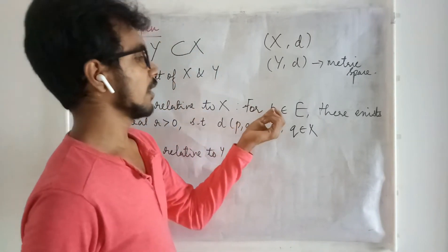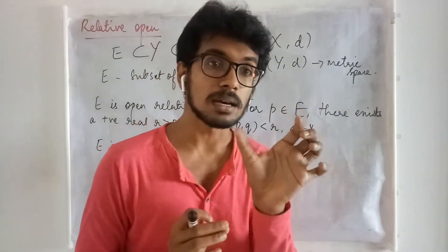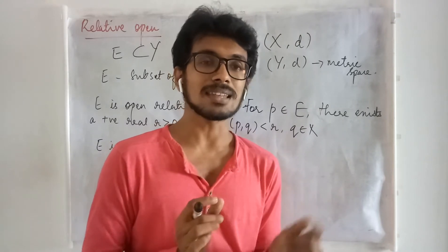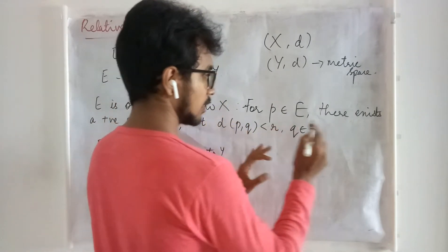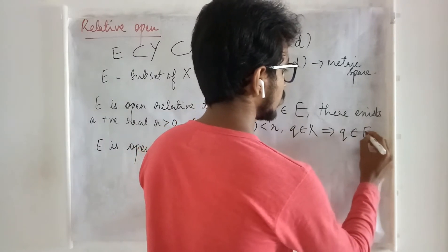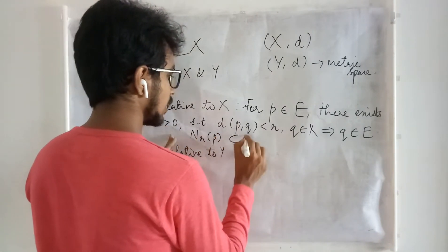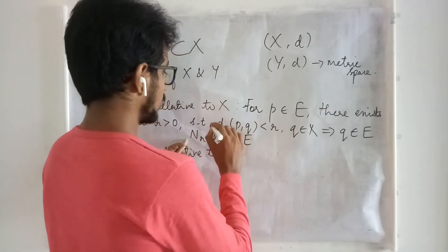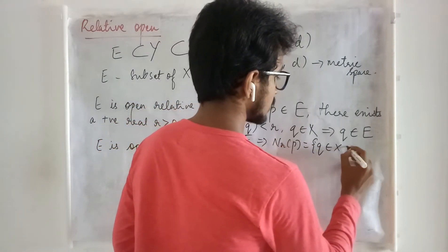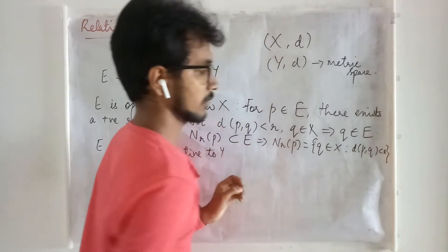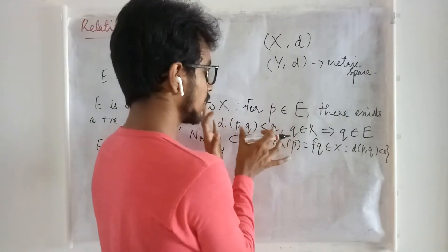For every point P in E, there exists a positive real number R such that the neighborhood N_R(P) is contained in E. Here, N_R(P) is the collection of points Q in X such that D(P, Q) is less than R, and this neighborhood is contained in E. The points in X satisfying this condition are in E.